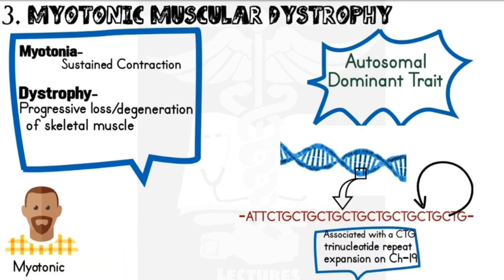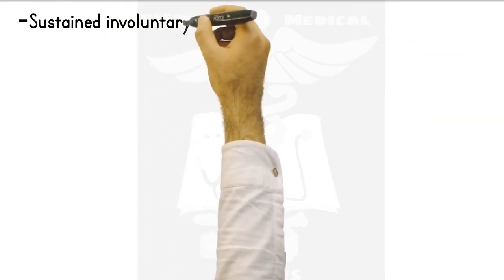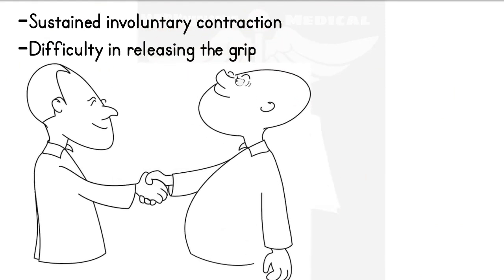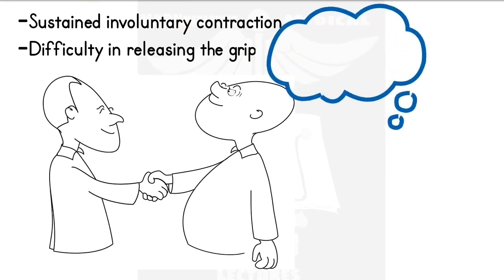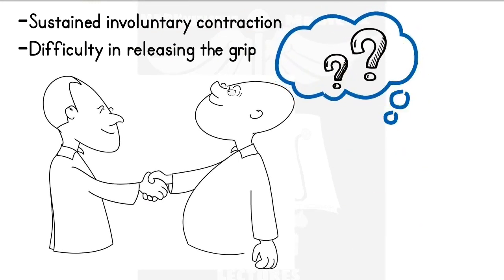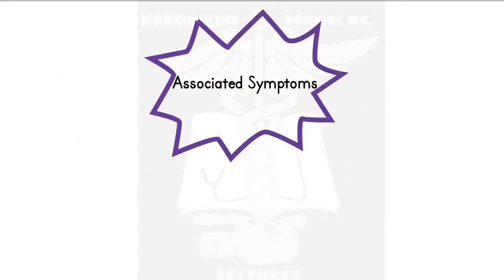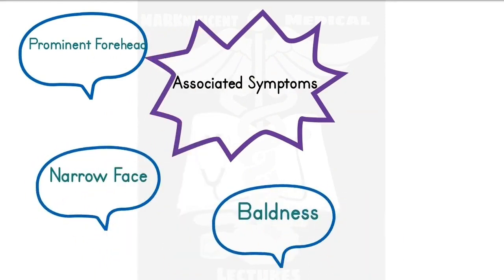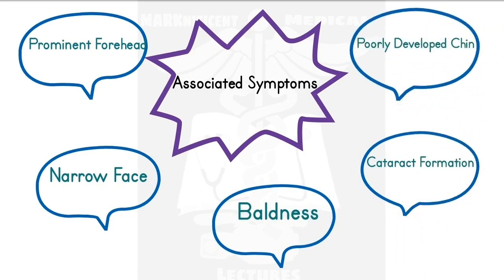Myotonic dystrophy is the most common form of muscular dystrophy in adults, while Duchenne muscular dystrophy is usually common in children. In myotonic muscular dystrophy, the key symptom is sustained involuntary contraction. For example, if you shake someone's hand, there is difficulty in releasing the grip because the muscles are still contracting and it takes a while for this contraction to disappear. Other associated symptoms include a prominent forehead, narrow face, baldness, cataract formation in the eyes, and a poorly developed chin.